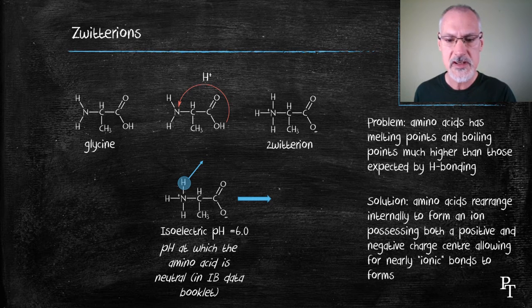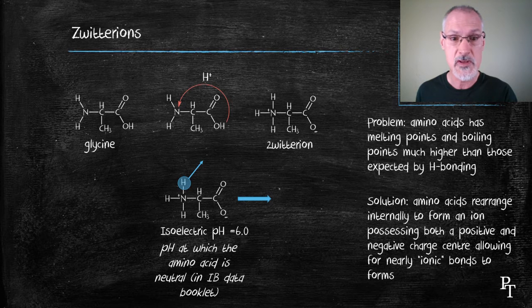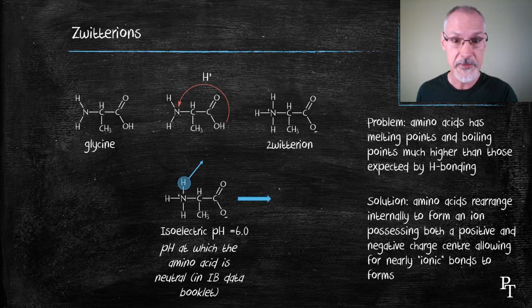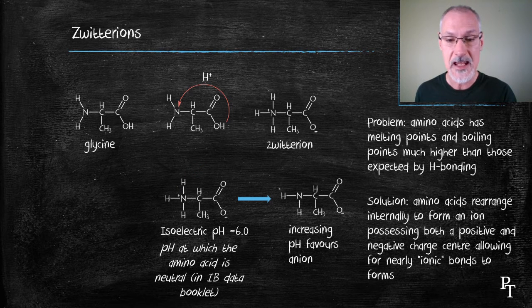For instance, if we increase the pH, increasing the pH could be achieved by the addition of OH ions, which would essentially remove the H plus ion to form water. That would leave behind a substance with a negative charge, an anion.